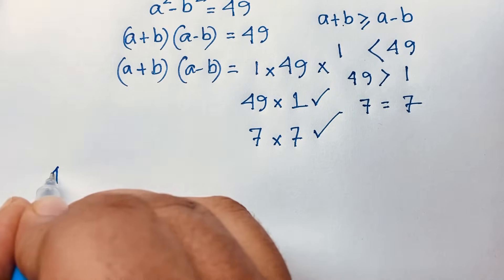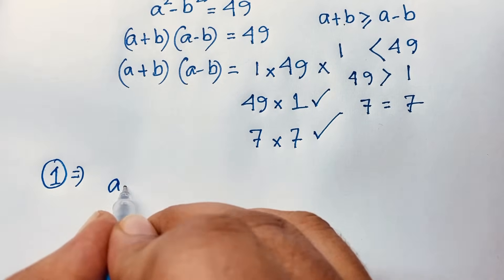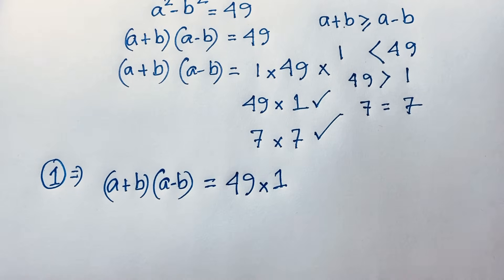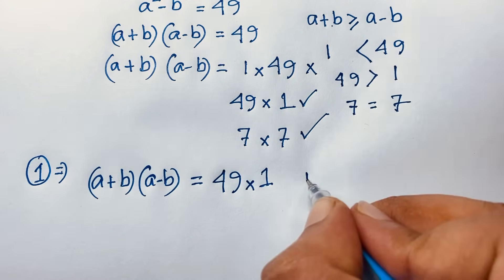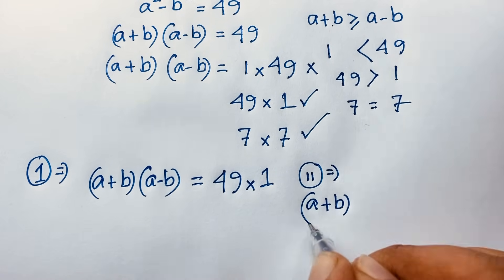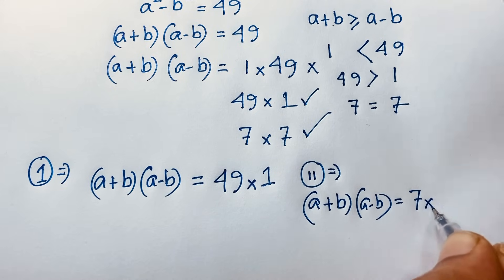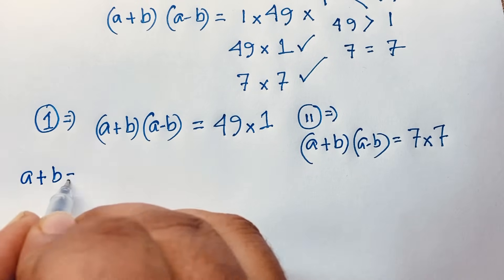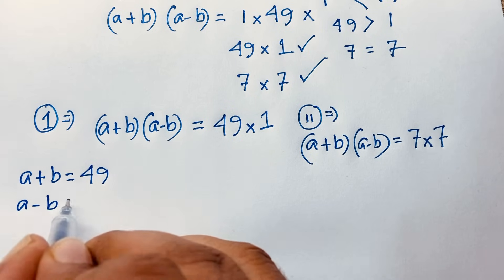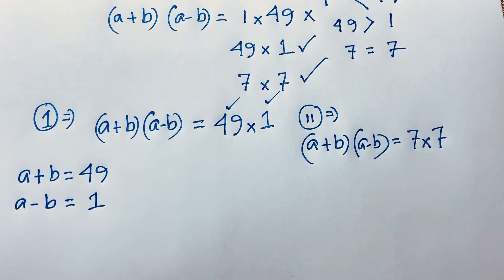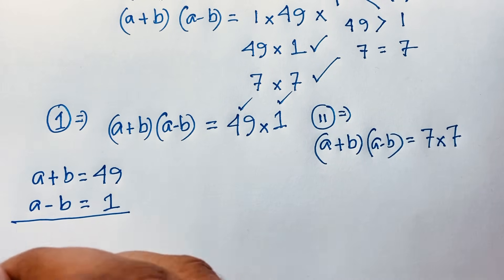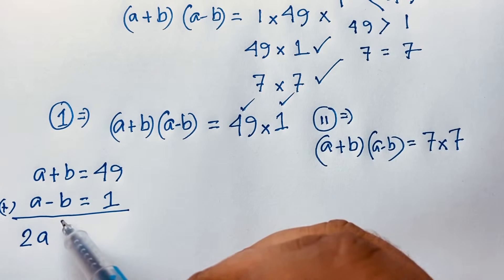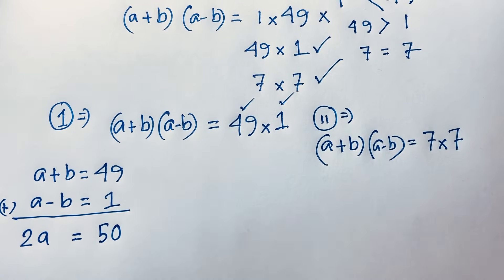First case: (a + b)(a - b) = 49 × 1, so a + b = 49 and a - b = 1. Now I add both equations: a + a gives 2a, and the b terms cancel out. 49 + 1 = 50, so 2a = 50.